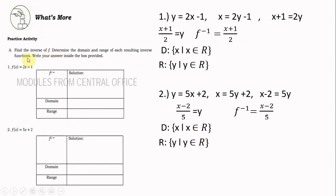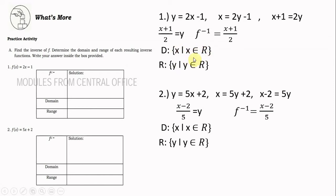What's More — find the inverse of each function and determine its domain and range. Number 1: f(x) = 2x − 1. Change to y = 2x − 1, interchange x and y: x = 2y − 1, solve for y: y = (x + 1)/2. The inverse is f⁻¹(x) = (x + 1)/2. The domain and range are both the set of real numbers, since this is a linear function.